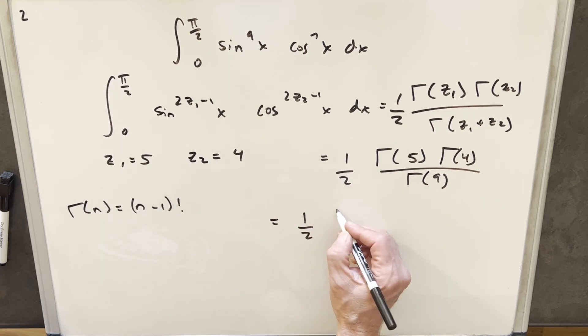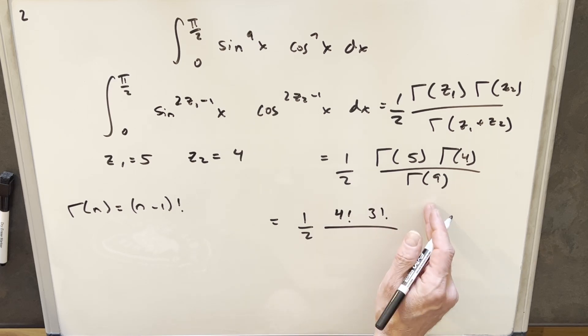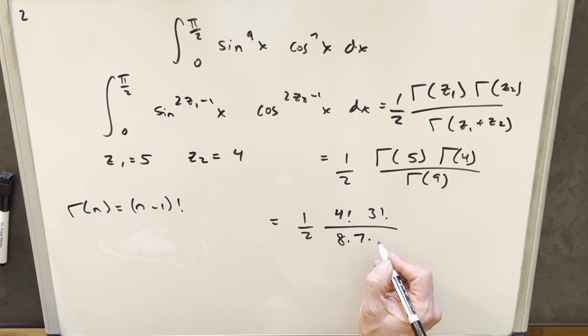So gamma of 5 is going to be the same thing as 4 factorial. Gamma of 4 is going to be 3 factorial. Gamma of 9 is 8 factorial. I'm going to write that one out as 8 times 7 times 6 times 5 times 4 factorial.